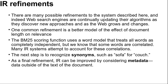The BM25 scoring function uses a word model that treats all words as completely independent. But we know that some words are correlated — for example, 'couch' is closely related to both 'couches' and 'sofa'. Many IR systems attempt to account for these correlations. If the query is 'couch', it would be a shame to exclude documents that mention 'couches' but not 'couch'. Most IR systems do case folding, and some use a stemming algorithm to reduce 'couches' to the stem 'couch' in both the query and documents. This typically yields a small increase in recall.